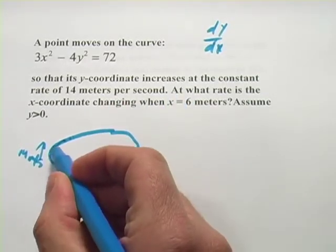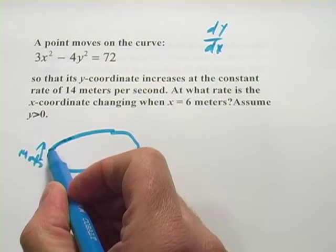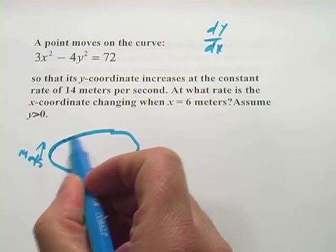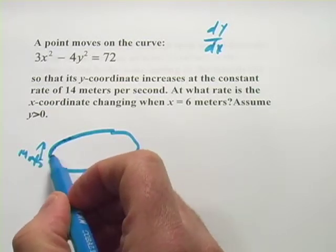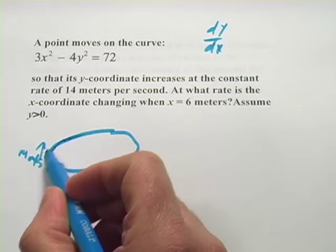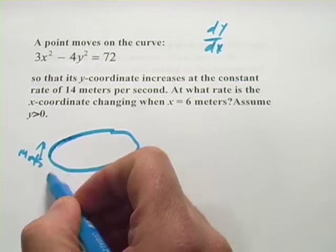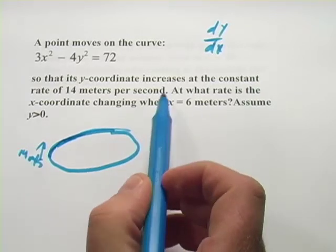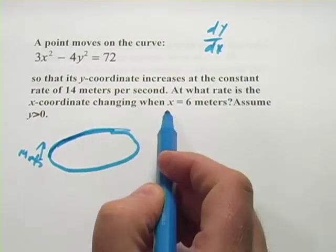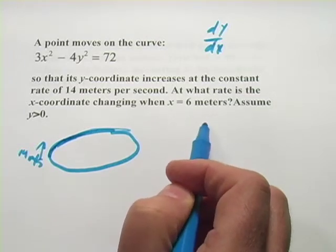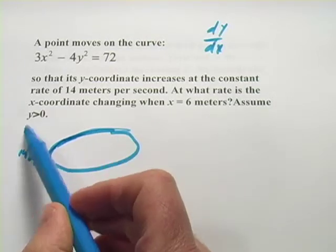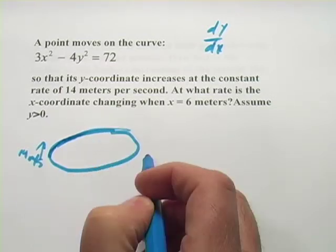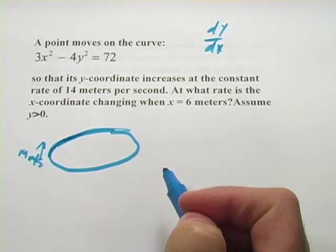And the question is, so if it's constantly rising 14 meters per second, here the x is going to be moving very little because it's almost vertical, but here the x would be moving a lot if the y is moving at 14 meters per second. So there's a variable rate at which the x-coordinate is increasing as a point moves along this curve. So the question here is, at what rate is the x-coordinate changing when x is at 6 meters, when x equals 6 meters? And we'll assume that y is greater than zero, so we're keeping this above the y-axis. So how do we approach this one?